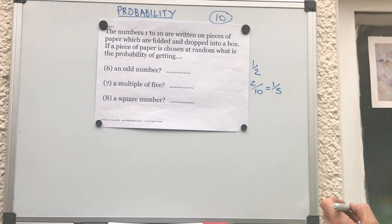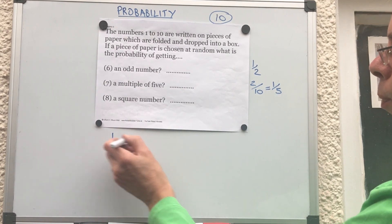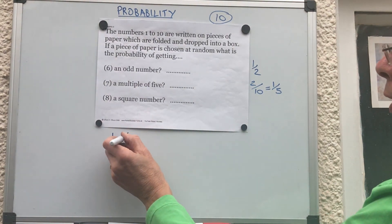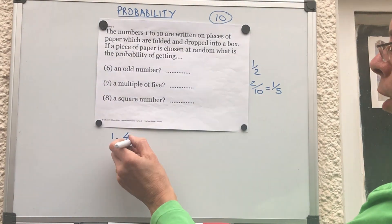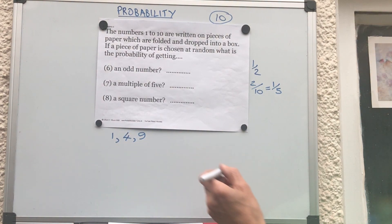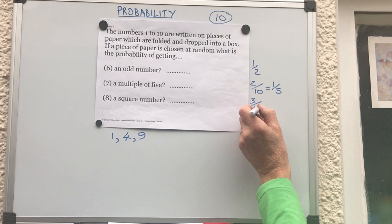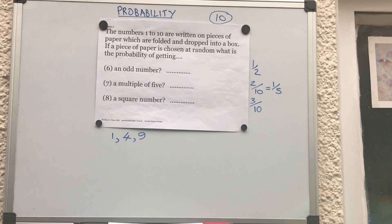A square number is a number that is the result of multiplying a number by itself. One times one is one, two times two is four, three times three is nine — those are the only square numbers between one and ten. So the probability of picking a square number is three out of ten.